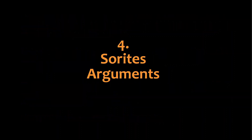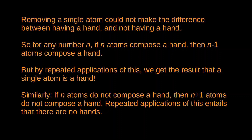Next, there are various Sorites arguments. My hand is composed of billions of atoms, and surely I could remove one of these atoms and I would still have a hand — in fact, that is constantly taking place because I'm shedding skin cells. Given how tiny atoms are, a single atom could not make the difference between having a hand and not having a hand. So we have a principle: for any number n, if n atoms compose a hand, then n minus one atoms also compose a hand. But by repeated applications of this principle, we would get the result that a single atom is a hand.